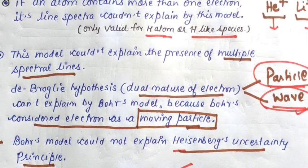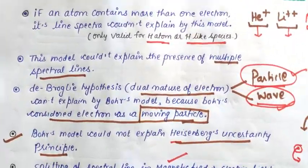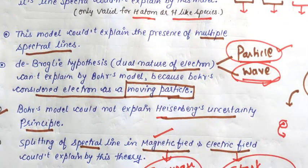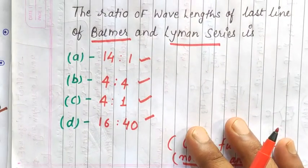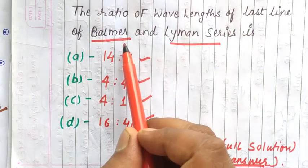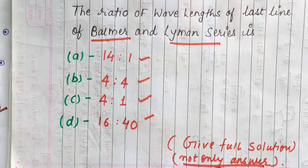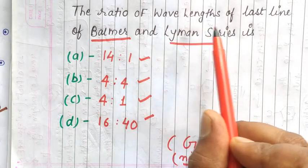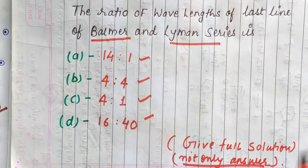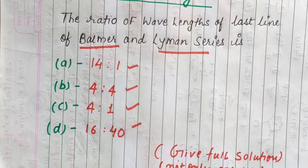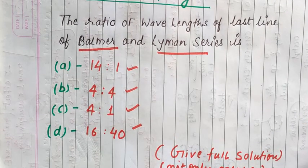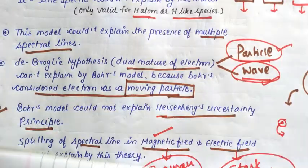You can note all these limitations. There is also a question for you to solve: what is the ratio of the wavelength of the last line of the Balmer series to the last line of the Lyman series? There are four options — choose the correct one and provide the full solution. In the next video, we will cover Heisenberg's uncertainty principle and De Broglie's dual nature, and then we will move towards quantum aspects. Please submit the solution as well as your notes on the drawbacks of Bohr's atomic model.